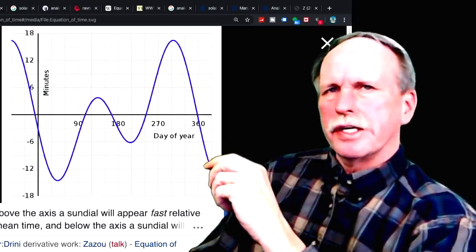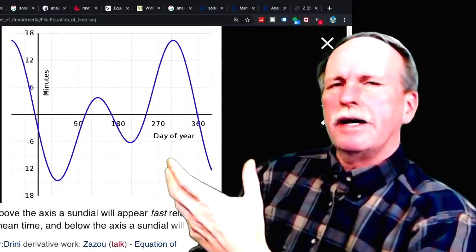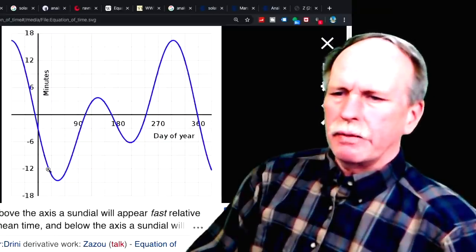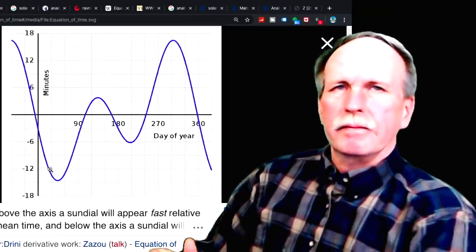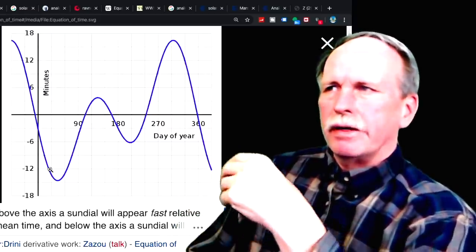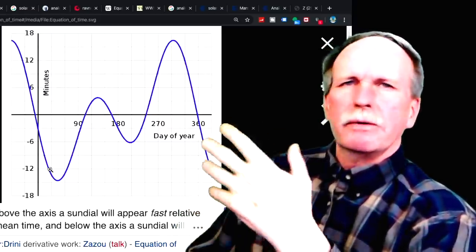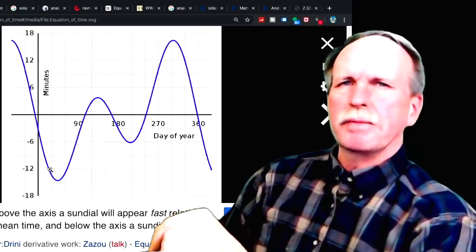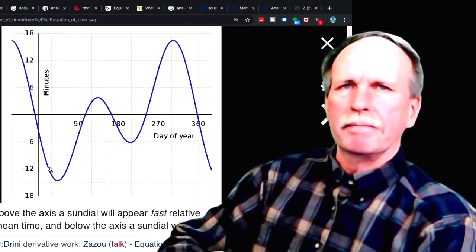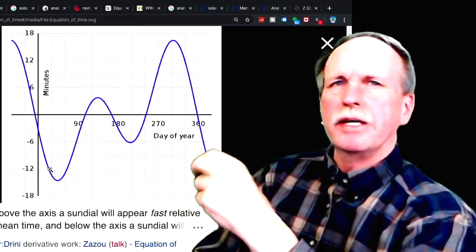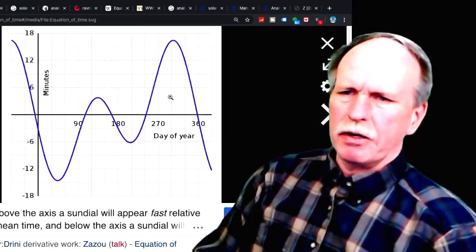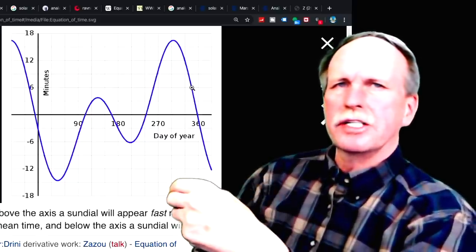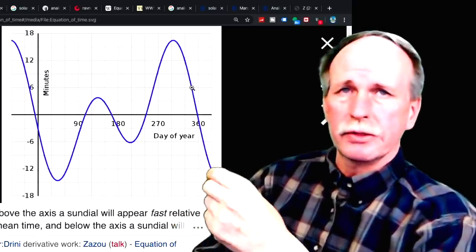And the way that we used to use this is that you would have a sundial in your house and you would have a copy of this graph. So say you went out and read your sundial on this day right here, which is sometime in January. Now if your sundial told you that it was 12 noon, you would go to this chart and see that you had to subtract 12 minutes from that to get the correct clock time. So it would actually be 11:48 a.m. If you did the same over here, you saw that you would have to add six minutes. So if the sundial said that it was 12 noon, it would actually be 12:06 p.m.